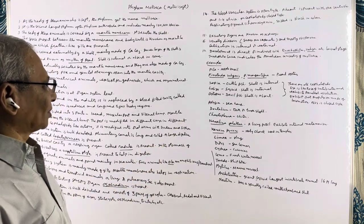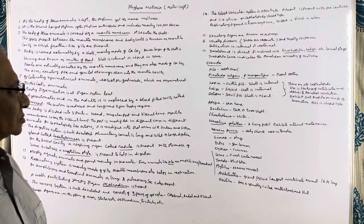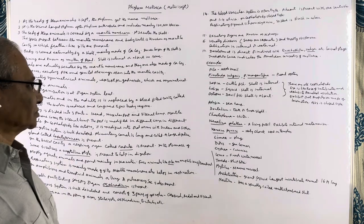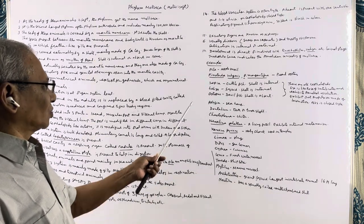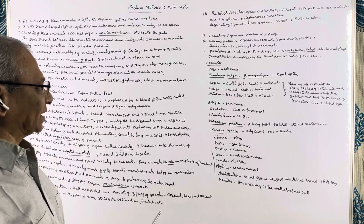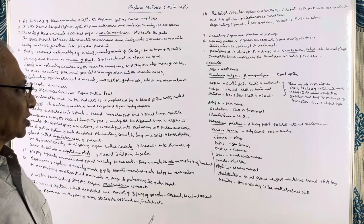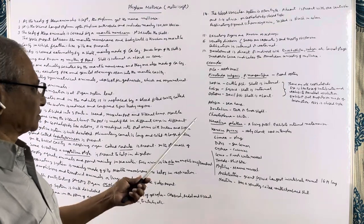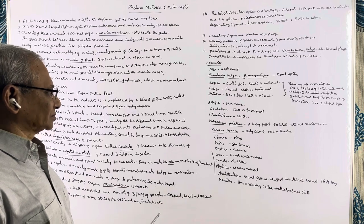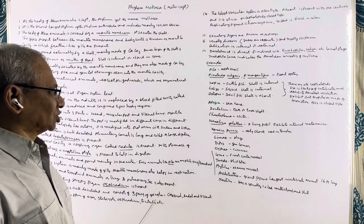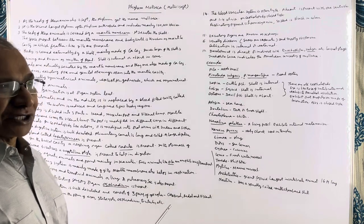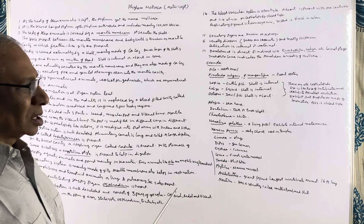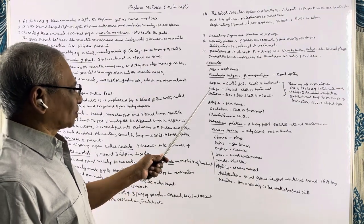Sepia is commonly known as cuttlefish, and in this animal the shell is internal. Loligo is known as squid, and the shell is also internal. Octopus is commonly known as devil fish, and the shell is absent. In octopus, the oral arms are eight in number, hence the name octopus.